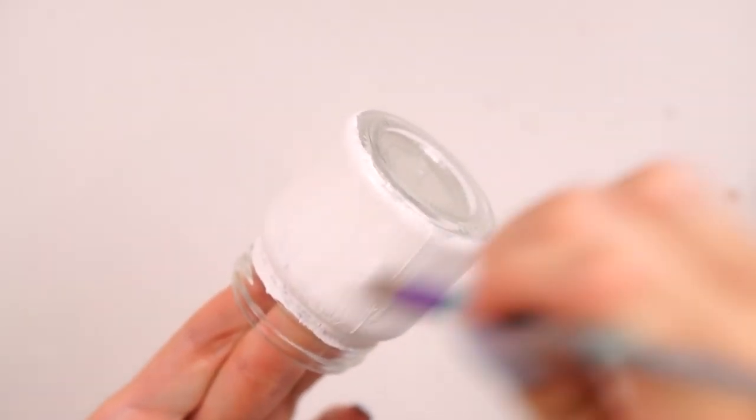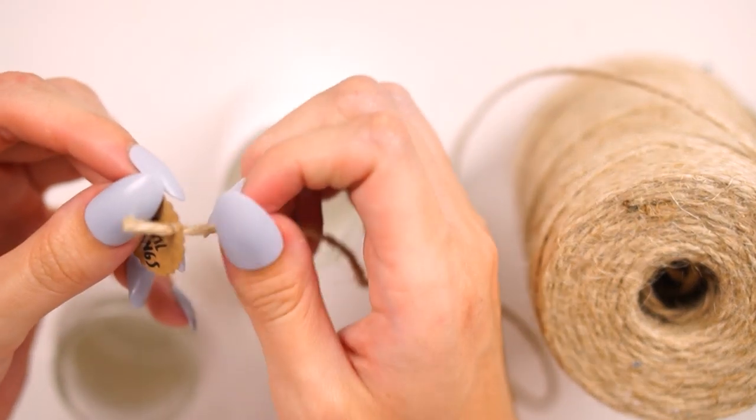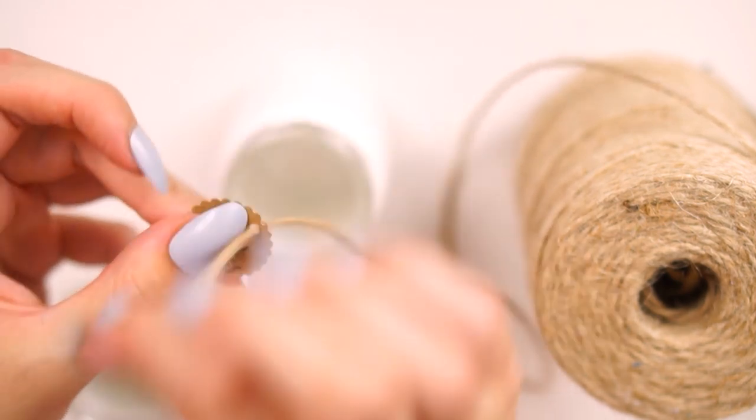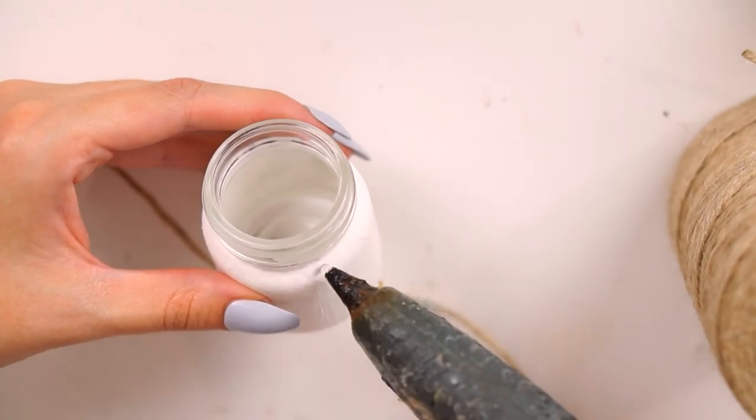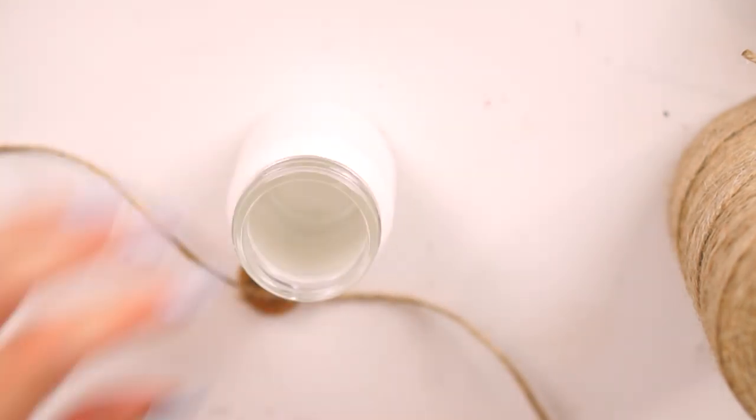So once all the white chalk paint was dry for the first layer, I then put on a nice thick second layer and left that dry also. Once dry I then assembled the tags onto some twine and just wrapped them around the neck of the jars, hot gluing them into place.